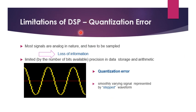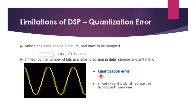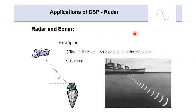Another limitation of DSP is quantization error. The precision in data, storage, and arithmetic is limited by the number of bits available. A smoothly varying signal is represented by a stepped waveform, introducing a small quantization error when sampling. By applying the sampling theorem properly, this quantization error can be minimized.